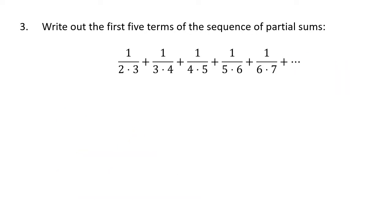Next up here we don't have a formula, but we do have the first five terms written out, so we can just go ahead and add those together. So s₁, again that'll just be the first term, 1 divided by 2 times 3, that's going to be 1/6.